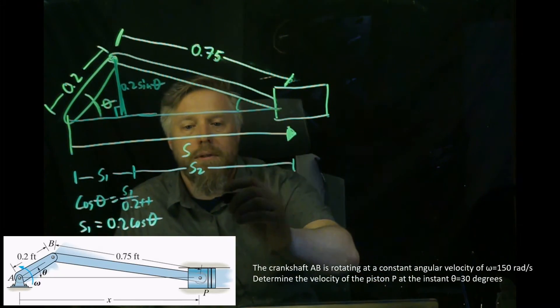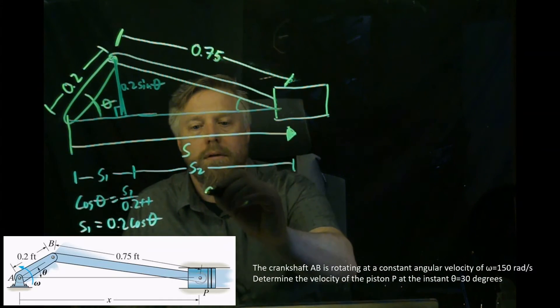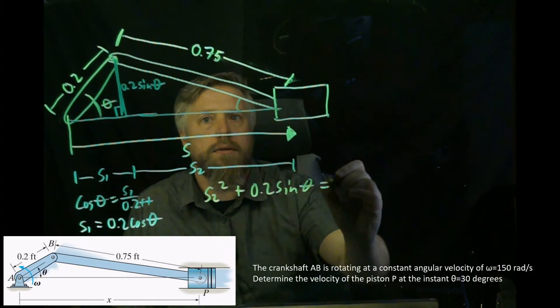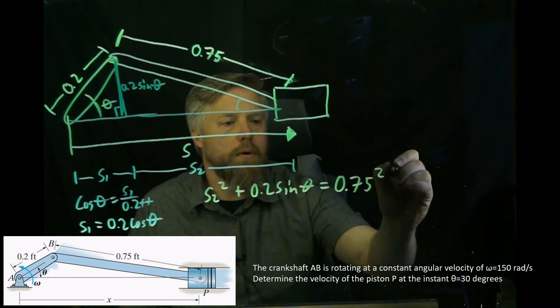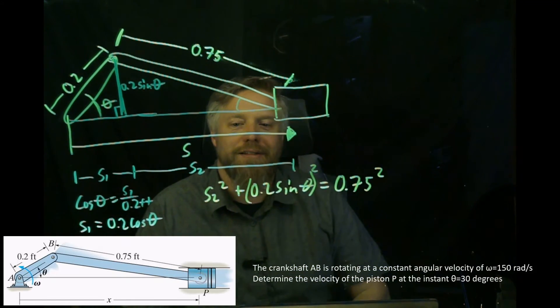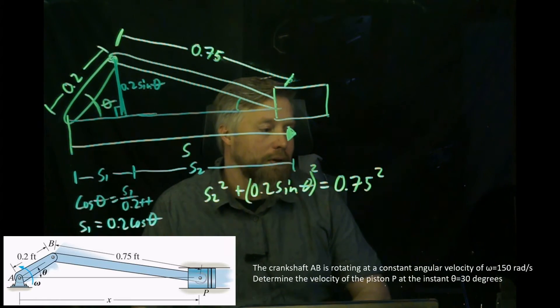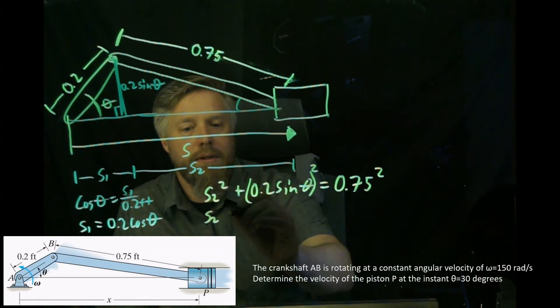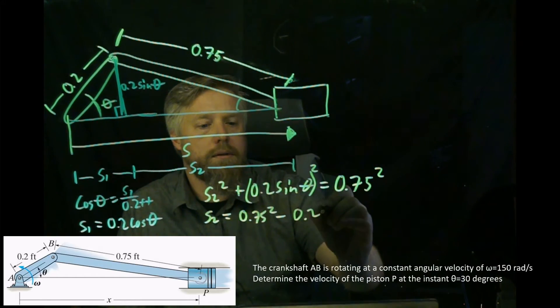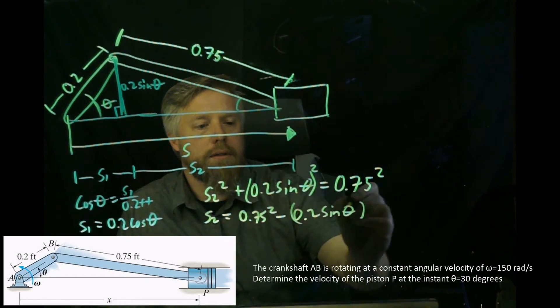We could say S2 squared plus 0.2 sine theta squared equals 0.75 squared—forgetting my powers today. Those two sides squared equal the hypotenuse squared. It's a more complicated equation, but because it only has theta and S2 in it, it'll help us have a relationship between S and theta, which is what we're looking for. So solve for S2: S2 equals the square root of 0.75 squared minus 0.2 sine theta quantity squared.